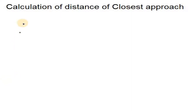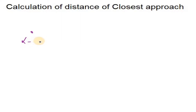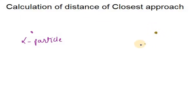In this tutorial we are going to see the calculation of closest distance of approach. In the Rutherford experiment, when an alpha particle is bombarded on a nucleus of gold — let's say we have a nucleus of gold here.